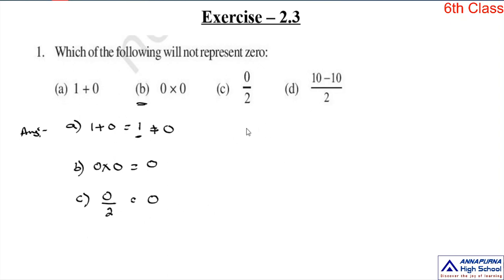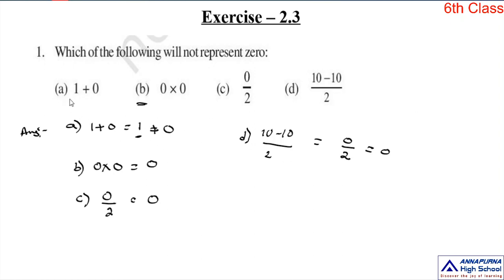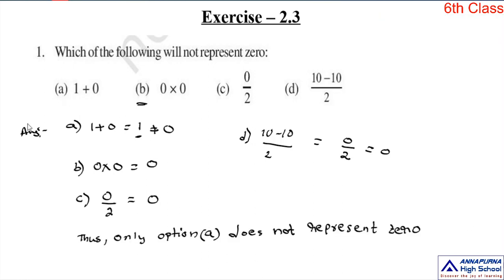Next option D: 10 minus 10 divided by 2. First we simplify the numerator: 10 minus 10 is equal to 0. So we get 0 by 2, and 0 by any number is always 0. In these four options, B, C, D all result in 0. Option A, which is 1 plus 0, does not represent 0. So the answer is option A.